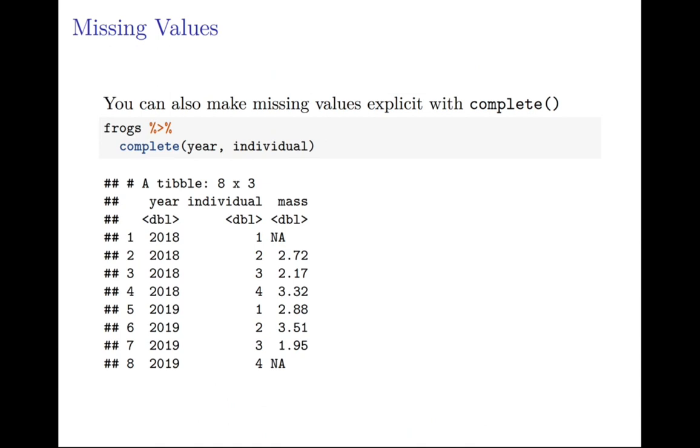You can also then take this data set we've just created and again make those missing values explicit with the complete function, in case you want to be able to count rows or something like that. You can use frogs, and then you want to complete year and individual. That allows you to see which masses you have explicit NAs for.